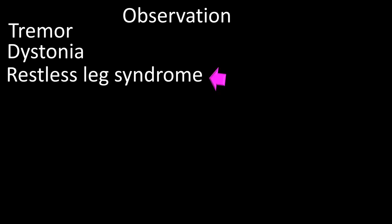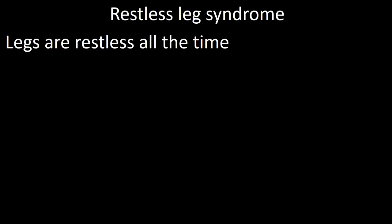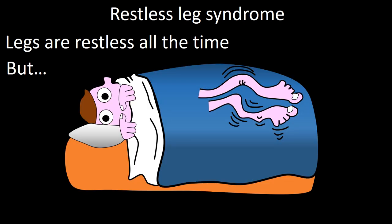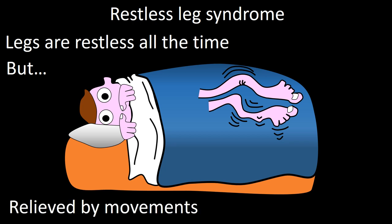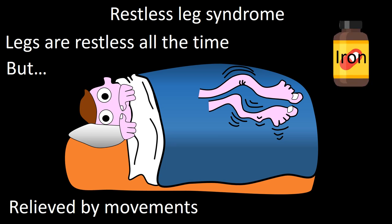Next, after dystonia, we will talk about restless leg syndrome. Patients have an urge to move their legs at all times of the day, but especially at sleeping time, to the point that the most frequent complaint driving these patients to see a doctor is insomnia. The urge to move is relieved by moving, but moving keeps the patient awake. Restless leg syndrome is seen with metabolic diseases such as kidney disease, and iron deficiency can be a cause — treatment with iron may improve sleep.